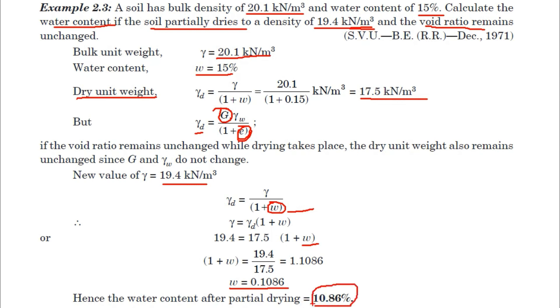So, if the soil is partially dried, the water content is 10.86%. We will see the next problem in the following video. Thank you.